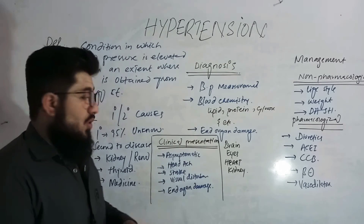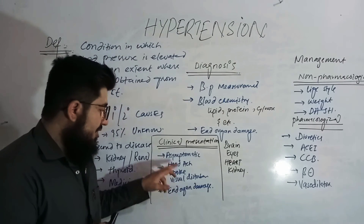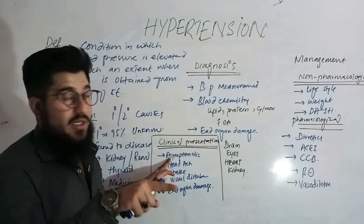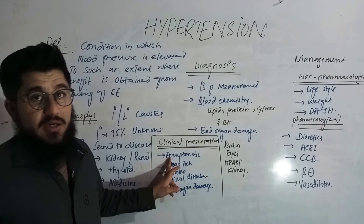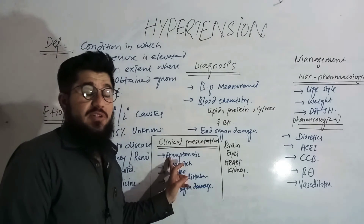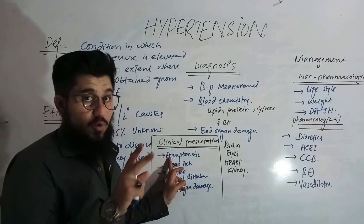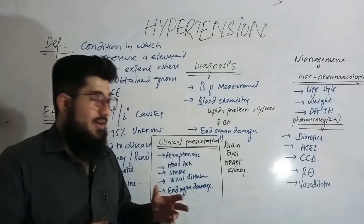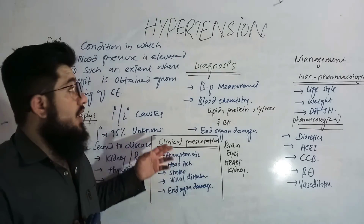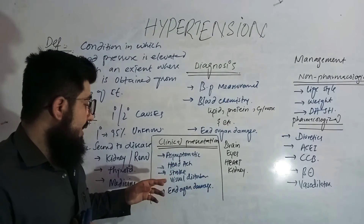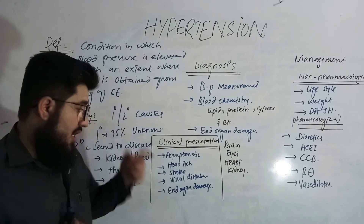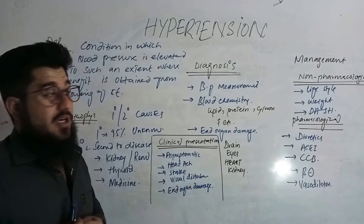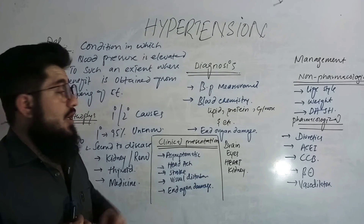Regarding clinical presentation, hypertension may be asymptomatic — especially in primary hypertension where there is also no known cause. When symptoms do occur, headache is a very possible clinical presentation, along with stroke, neurological disturbances, and end organ damage.